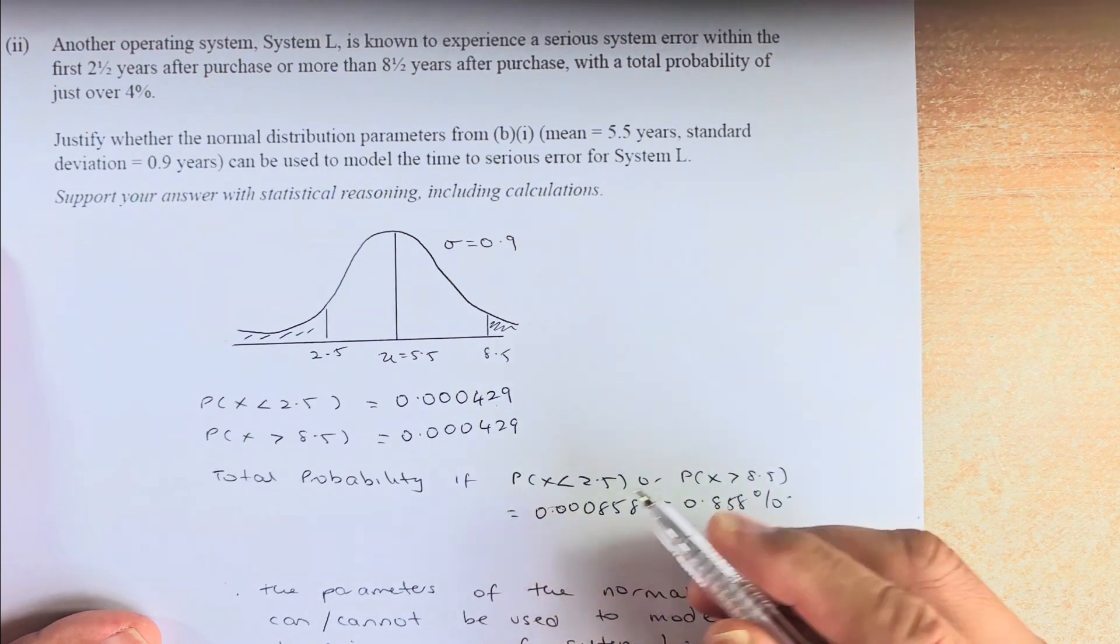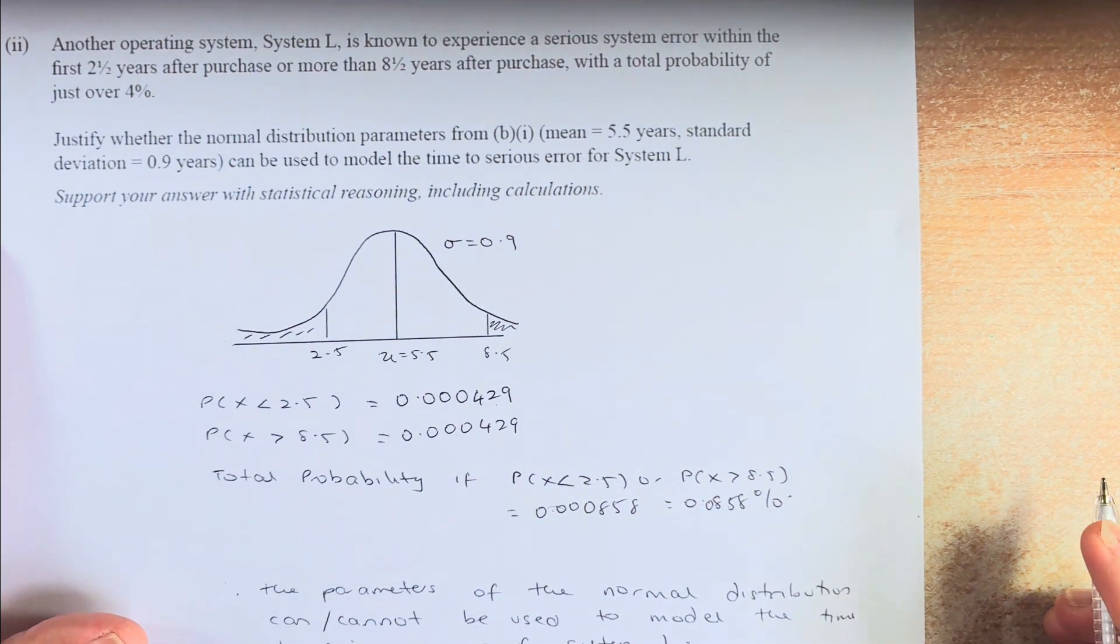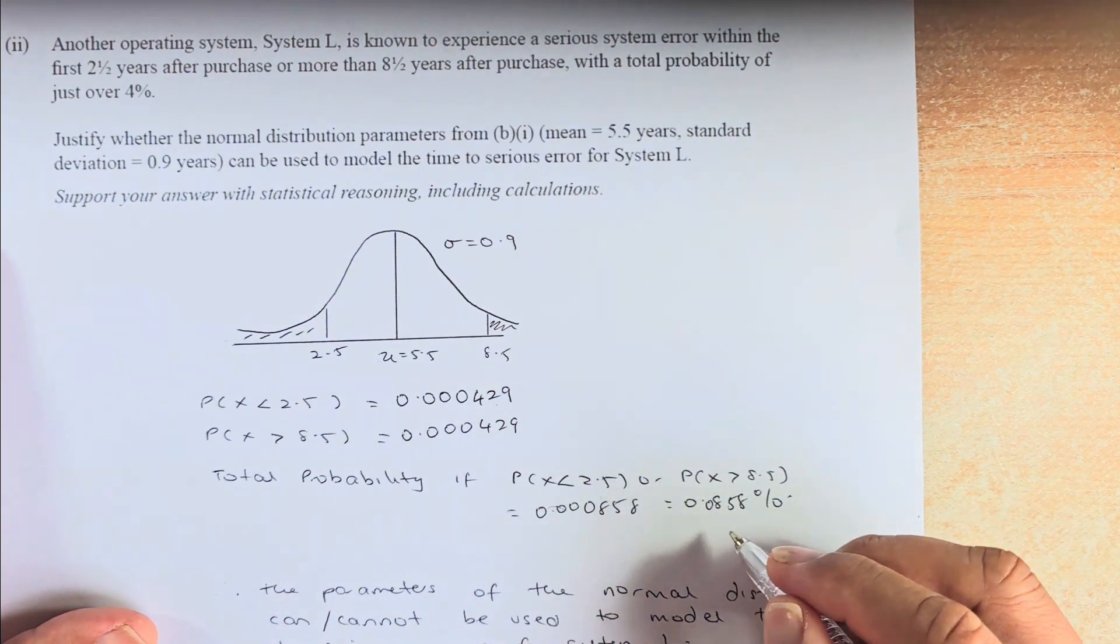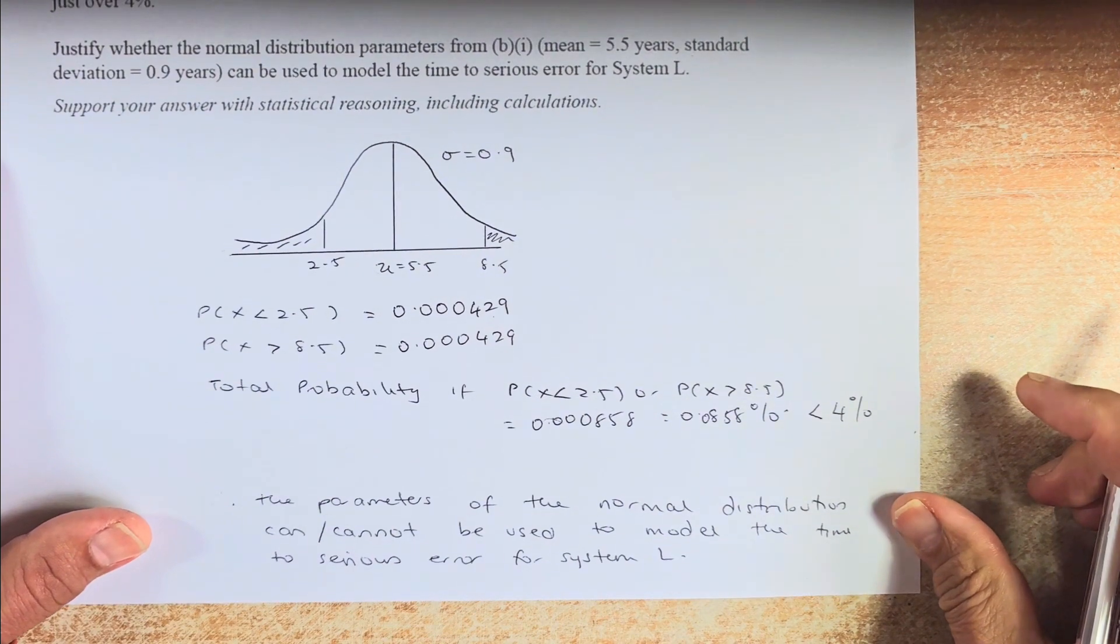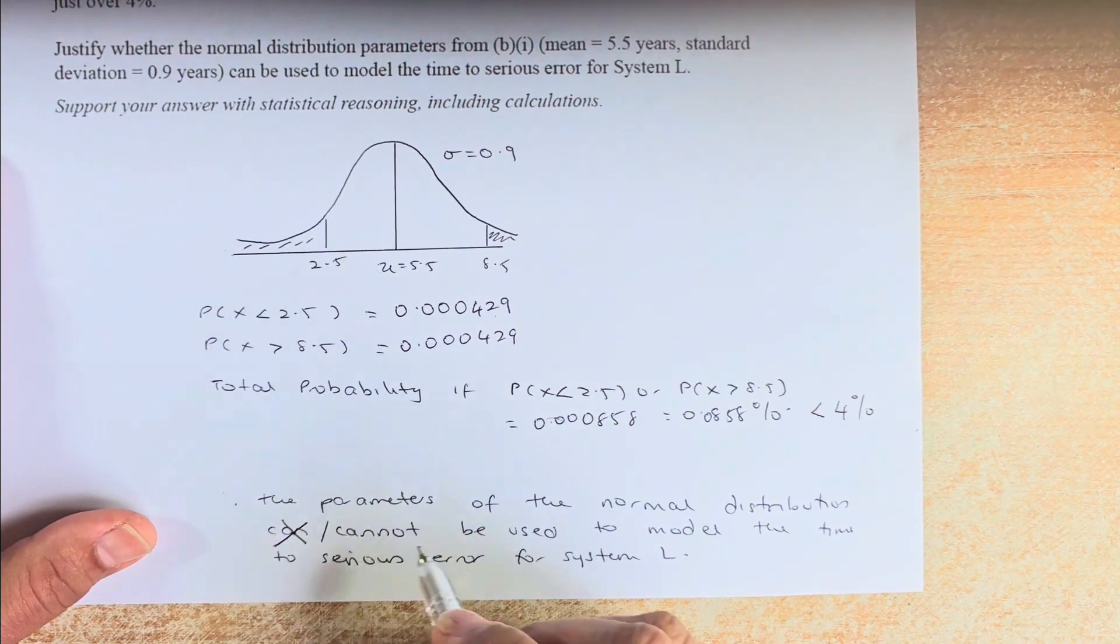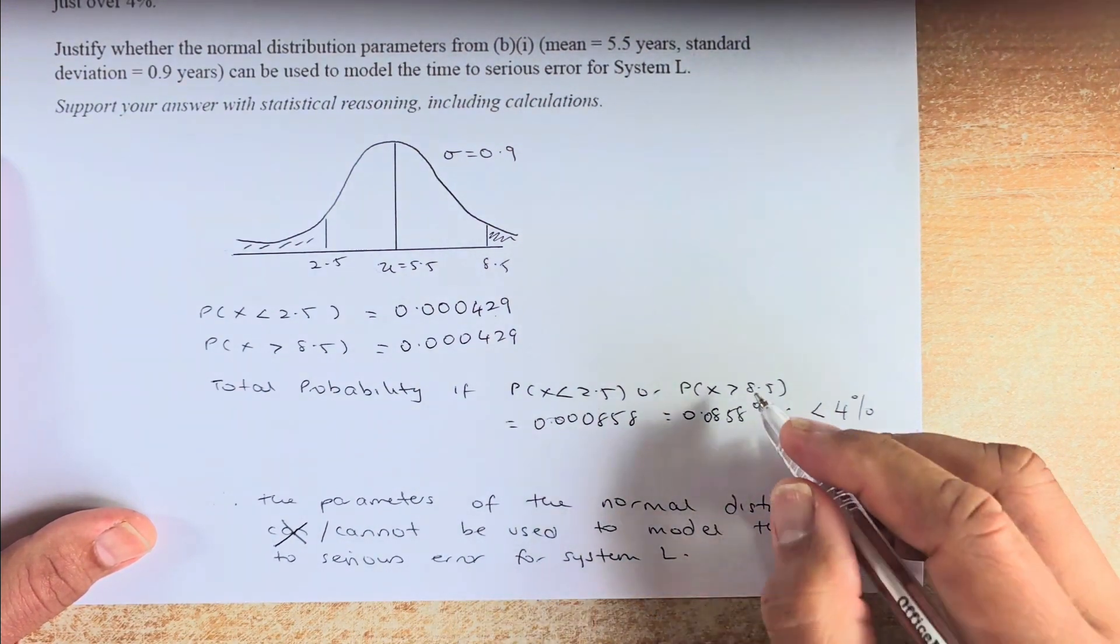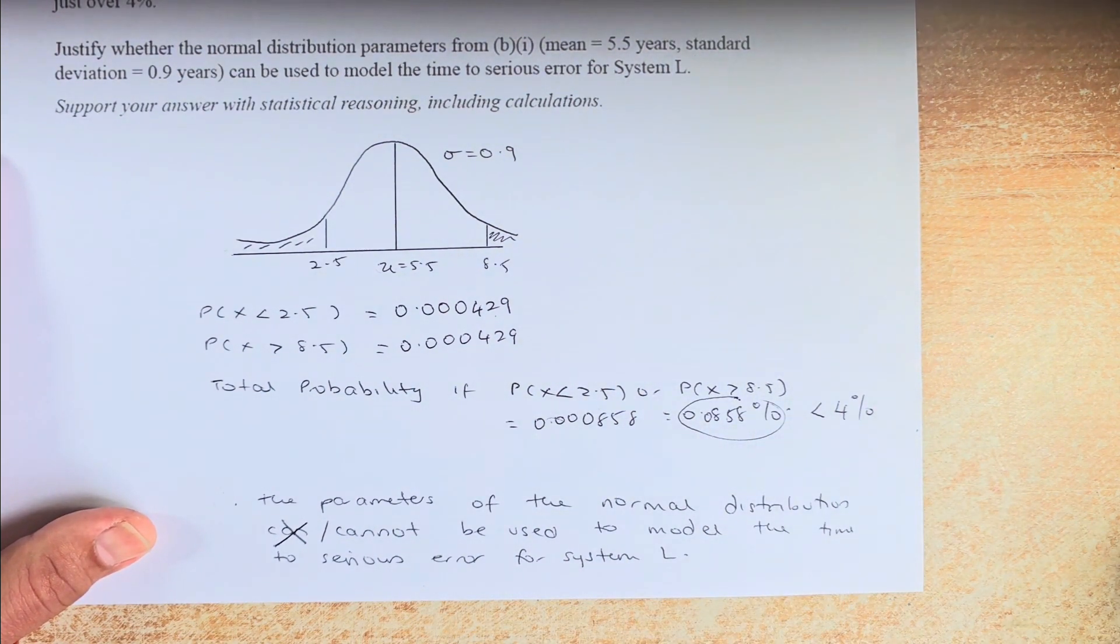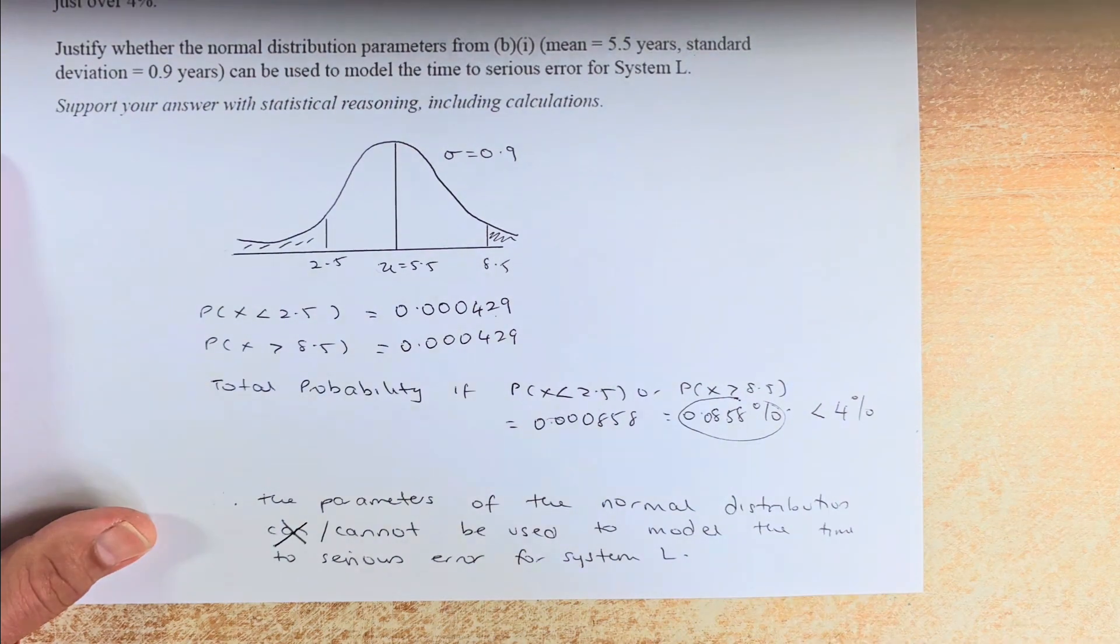So now, if you compare it to 4%, it is less than 4%. So to conclude, you must put the statement, the parameters of normal distribution cannot be used to model the time to serious error for system L, because it's only 0.0858% compared to 4%. So that is how you answer that.